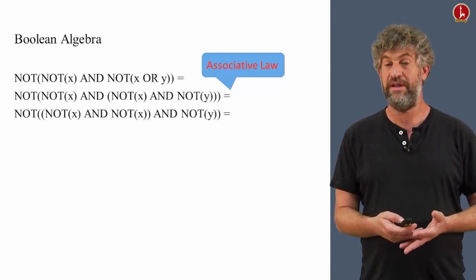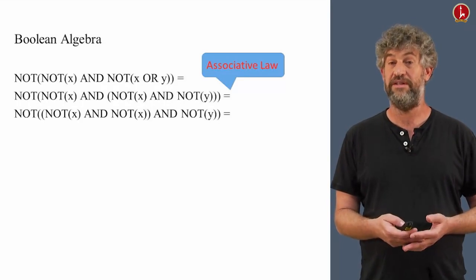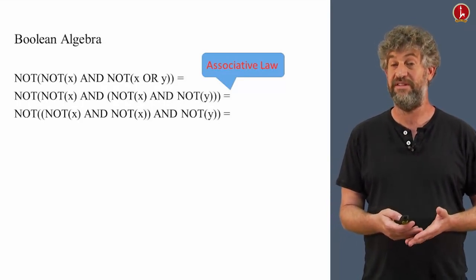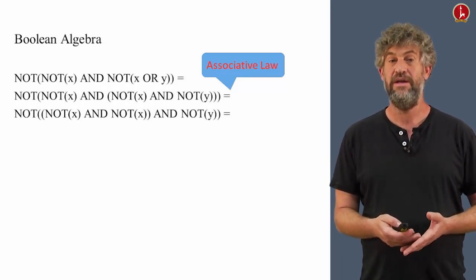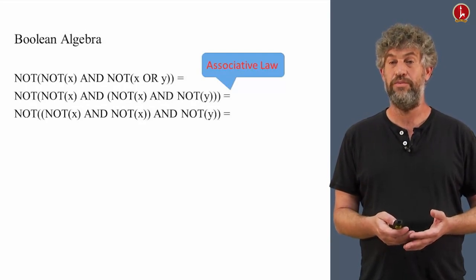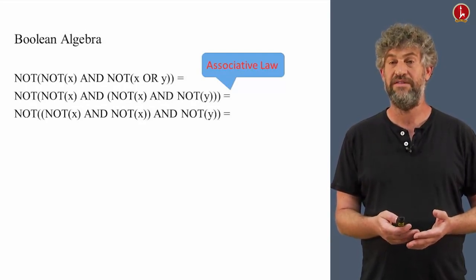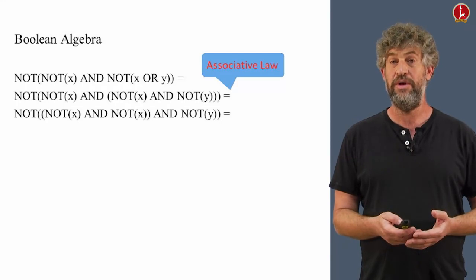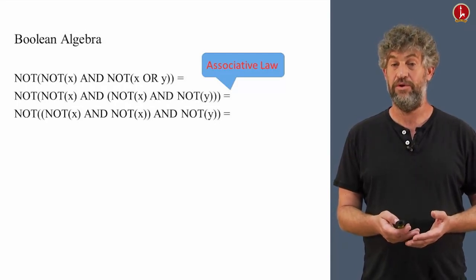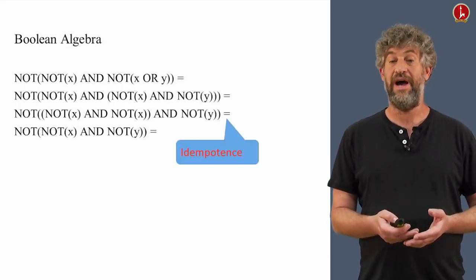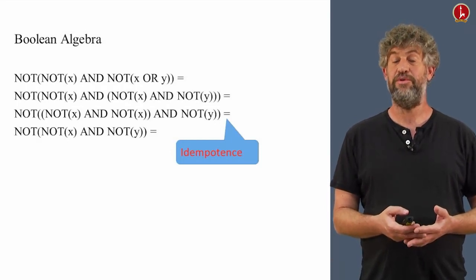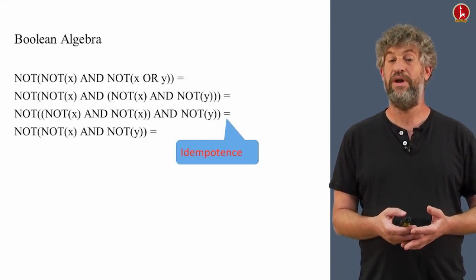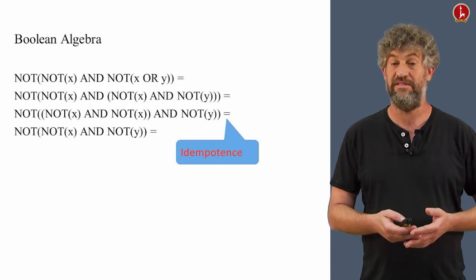We can actually see that's another identity that we didn't explicitly list, but it's easy to verify in the same way, that if you take any value w, in our case w is NOT(x), and do w AND w, that's completely equivalent to w. This is called the idempotence law. And we can thus simplify the previous expression by simply removing one of these NOT(x)s.